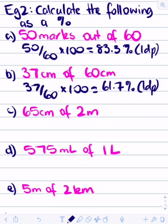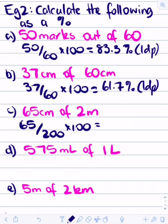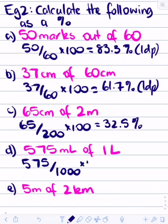To do a quantity out of a quantity, both values must be in the same unit. Here we have 65 centimeters and 2 meters, so we convert both to centimeters: 65 over 200 times by 100 equals 32.5%. Then 575 milliliters of 1 liter: 575 divided by 1000 times by 100 equals 57.5%.